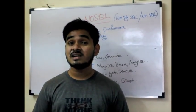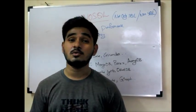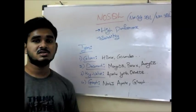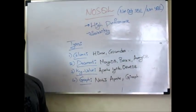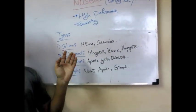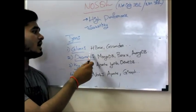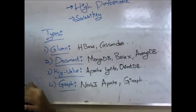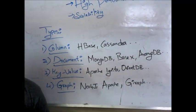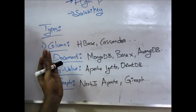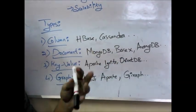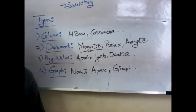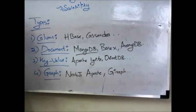What are the different types of NoSQL databases available? The first one is column-based NoSQL databases, where data is stored in the form of columns. The famous ones are HBase and Cassandra. HBase is popularly used in big data systems like Hadoop. The next one is document-based, where everything is transformed into document type. The popular ones are MongoDB, BaseX, and ArangoDB, of which MongoDB is the most popular and frequently used.